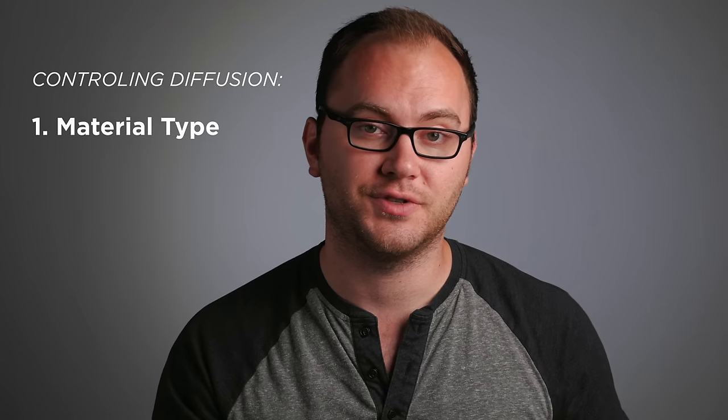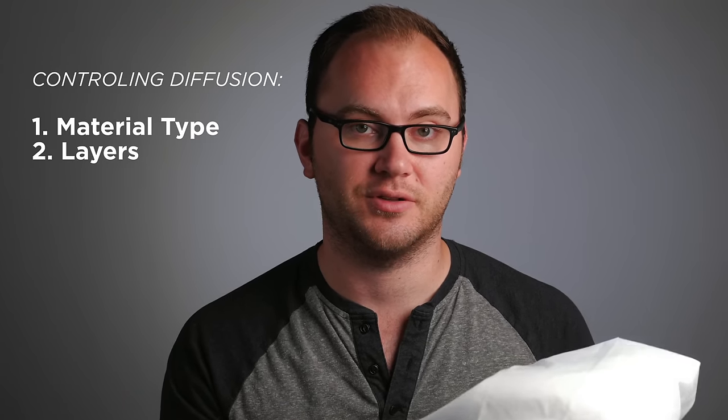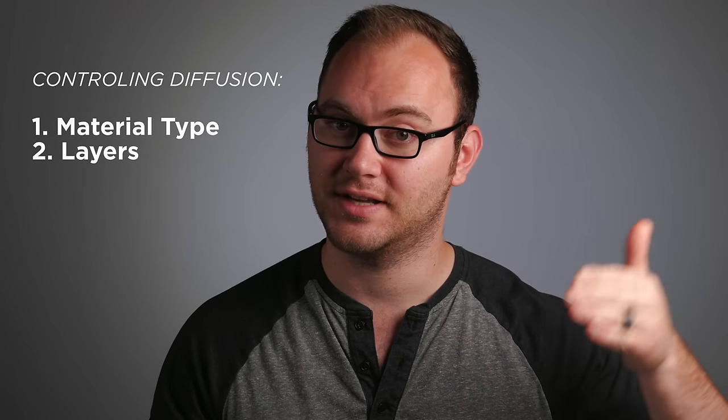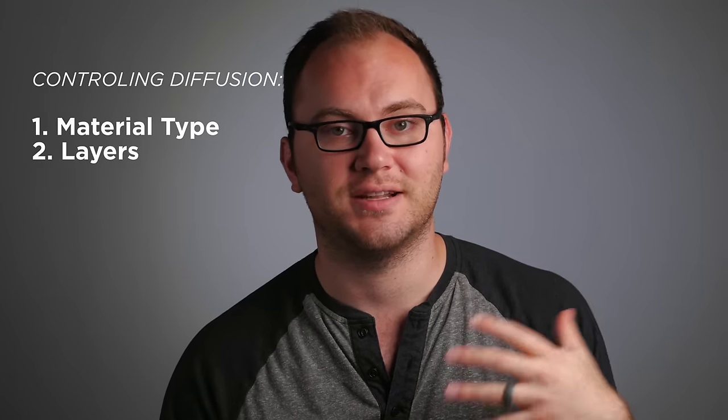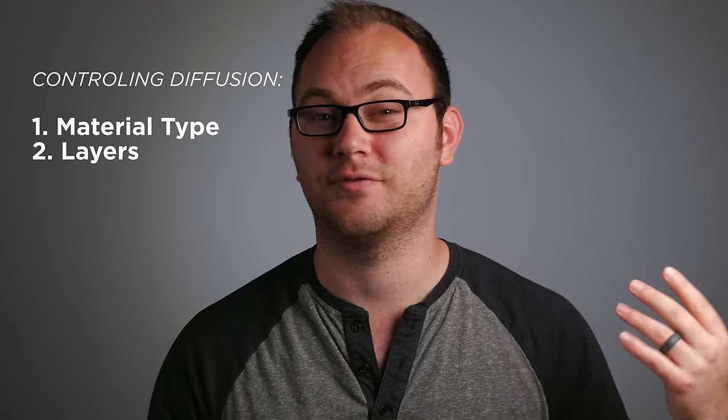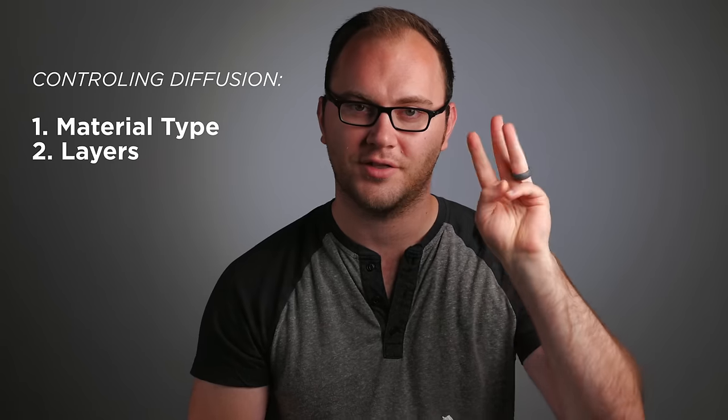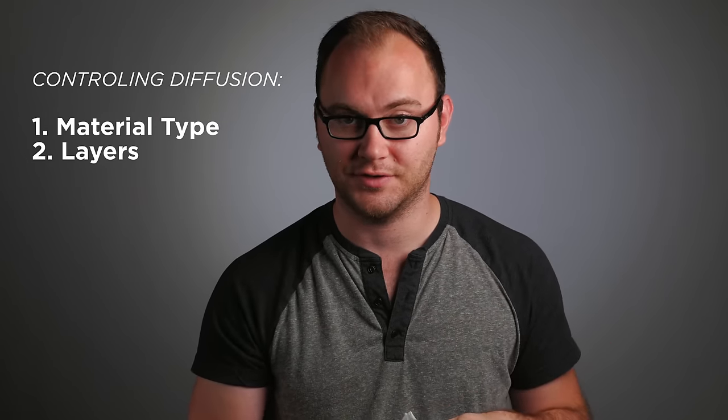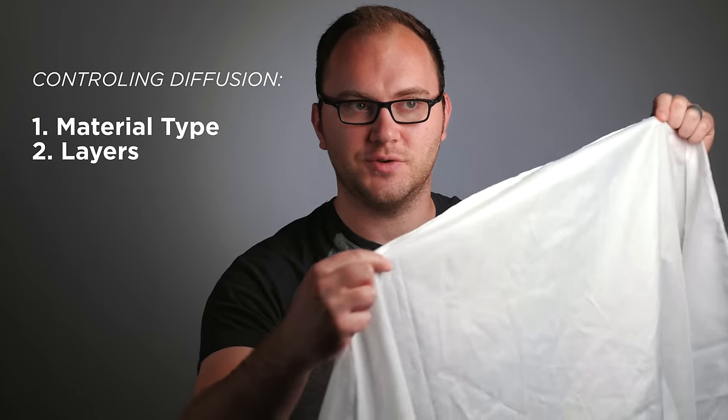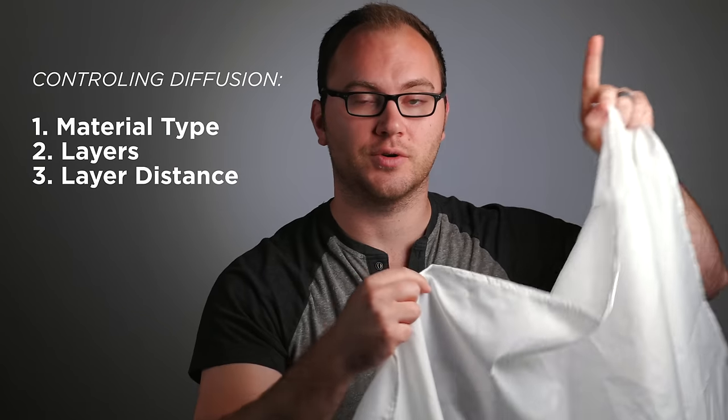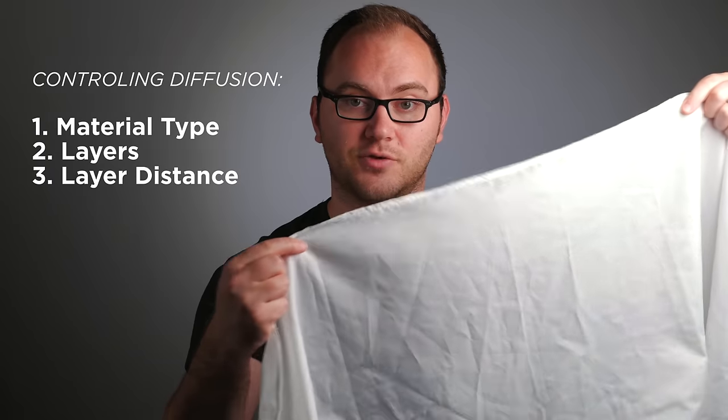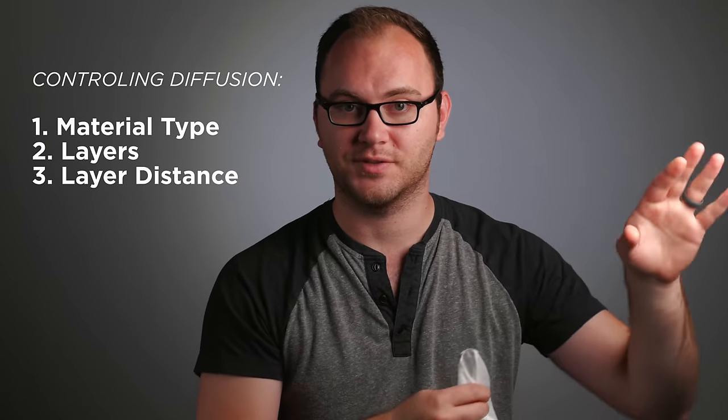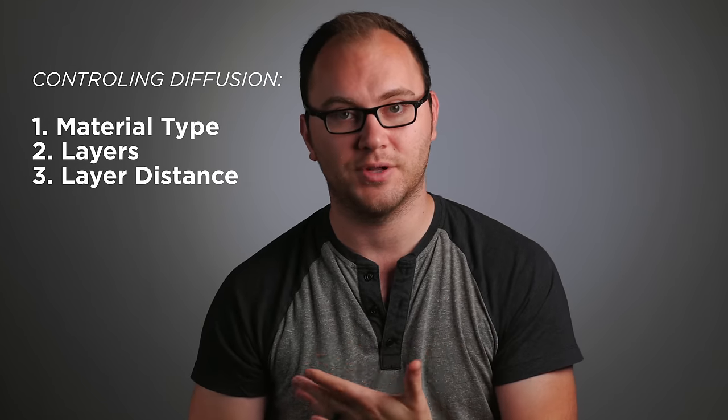The second way you can control diffusion is the layers of material. Often one layer will be enough, but you can stack layers in different types of material to create different levels of softness and different softness qualities. The third way to adjust and control that level of softness or diffusion is to use the distance between your light source and your actual material. The further away your material is going to be from the source, the softer your output is going to be.